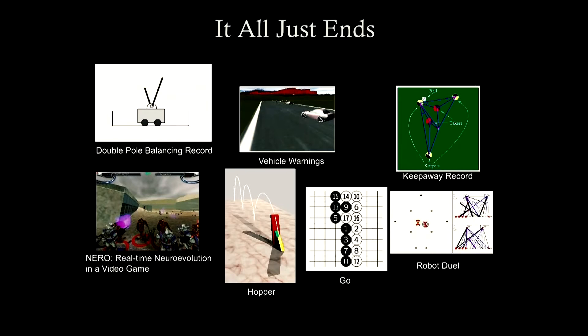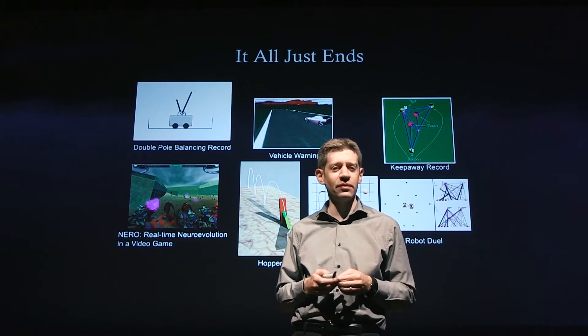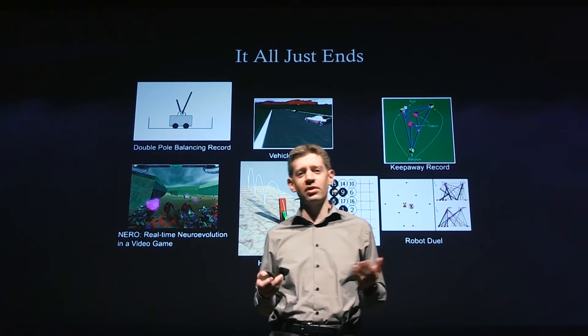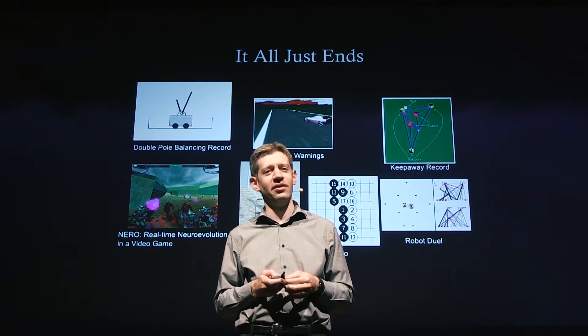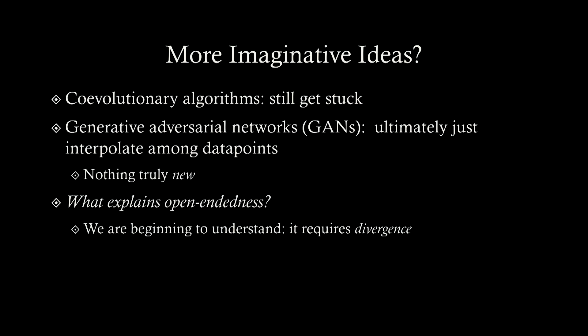All these experiments — controlling vehicles, robots, playing games, competitions, and all kinds of different things — they all just end. It's interesting to watch these algorithms converge to solutions, but they just end. People have tried to be more imaginative, thinking of extensions of the basic evolutionary algorithm to tease out what the missing ingredient is that would make this more open-ended.